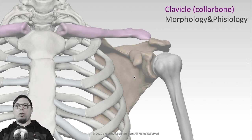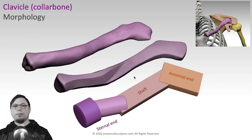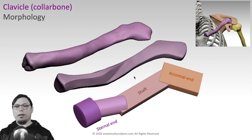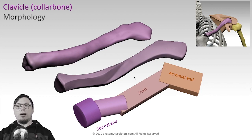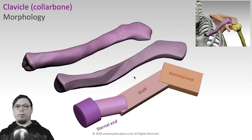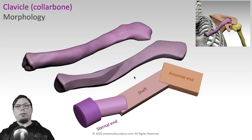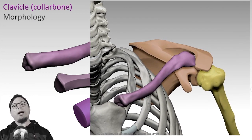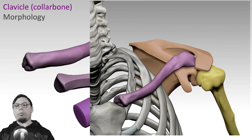Now let's talk about the morphology and physiology of the clavicle. I made a simplified model, breaking it into geometrical primitives for easy understanding. The acromial end and the shaft of the clavicle are flat, but the sternal end is more cylindrical, thicker, and rounder. The acromial end is flat because it connects to the flat acromion process — flat end connects to flat acromion process.